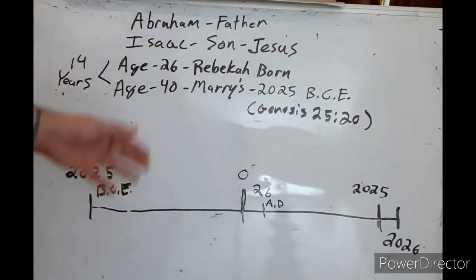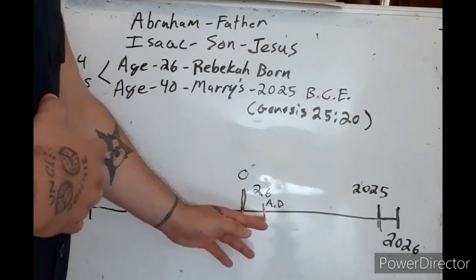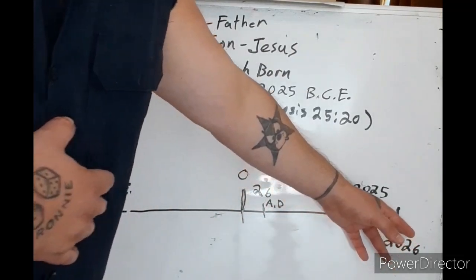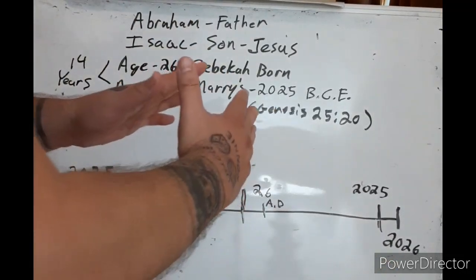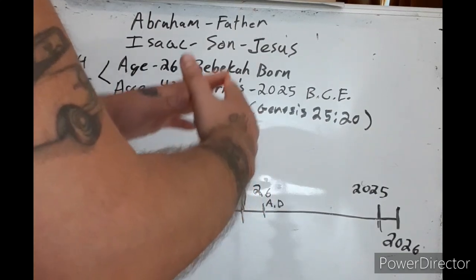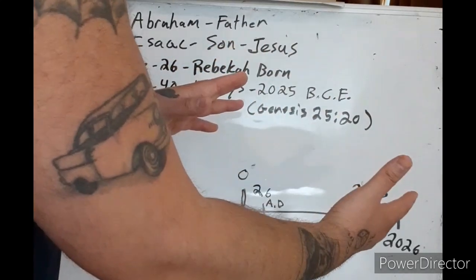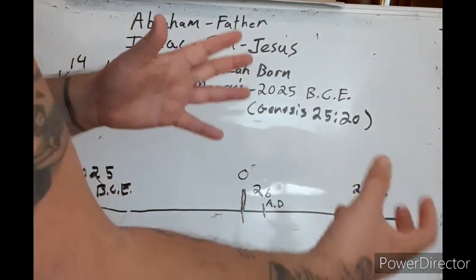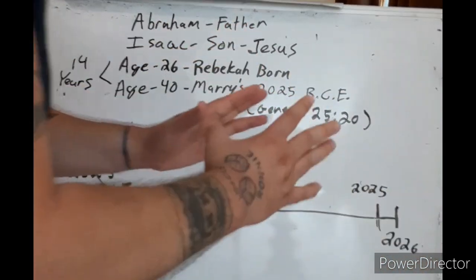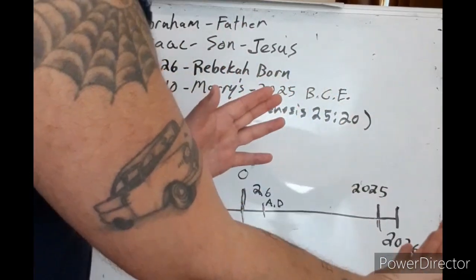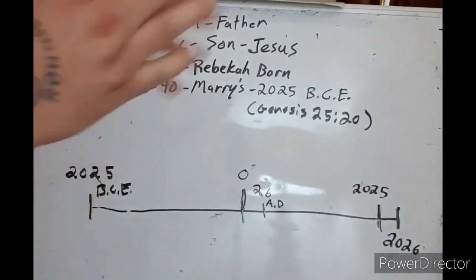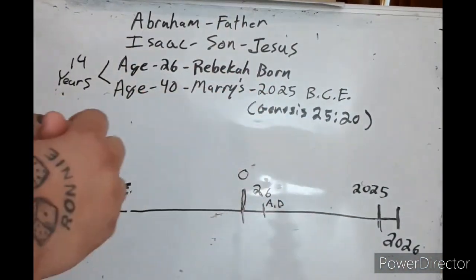Now you might be asking, the 40 jubilees from 26 AD takes you to 2026, not 2025. But you have to remember after the cross there was an extra year given to Israel to repent. They did not, so I believe that is where that extra year comes from, a year layover. This is all so amazing to me.